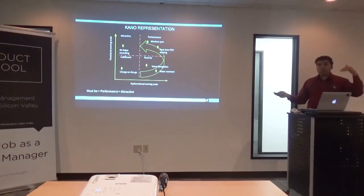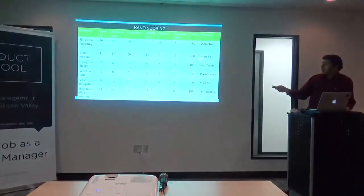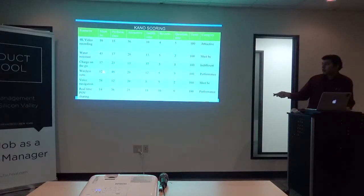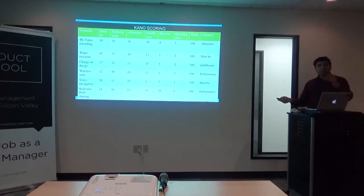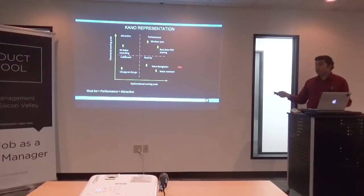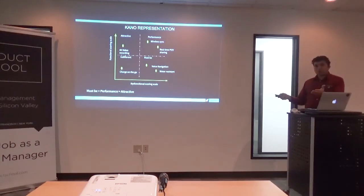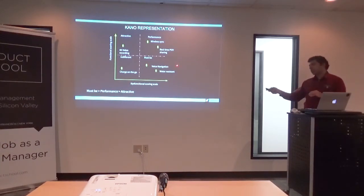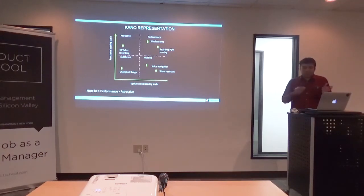Then you go into the must-be category — there were actually two features: voice navigation and water resistance. Within the same bucket, voice navigation actually ranked much higher, scoring 58 versus 40 users saying it's a must-have. So you do a sub-ranking within this quadrant — voice navigation is most important, followed by water resistance. If push comes to shove and there's only one must-have feature you need to ship, voice navigation is your absolute one-feature MVP. This is how you get to an MVP using a data-based approach — because so many customers said make it voice navigation.